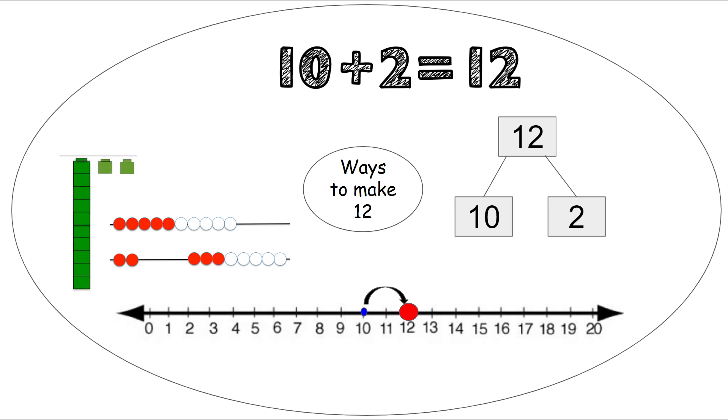We can use our unifix cubes. So we have here a tower of 10 and then we have two more to make 12. And lastly we can use our 10 frame. So we have 10 and 2 more. Our first 10 frame is all filled and then we have two more to make 12. 10, 11, 12.